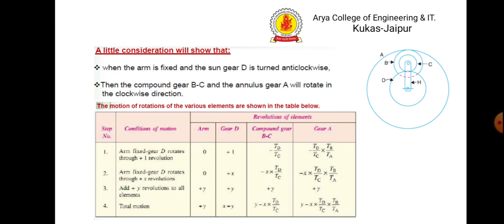Now, how to prepare the table. Suppose the arm is fixed and the sun gear d is turned anti-clockwise. If d rotates anti-clockwise, then the compound gear bc and the annular gear all rotate in the clockwise direction. For the first row: arm fixed, gear d rotates through plus one revolution. So arm is zero, gear d is plus one, compound gear is minus td by tc — minus because it rotates clockwise.